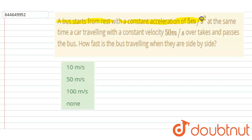A bus starts from rest with a constant acceleration of 5 meters per second squared. At the same time, a car traveling with constant speed 50 meters per second overtakes and passes the bus. How fast is the bus traveling when they are side by side?